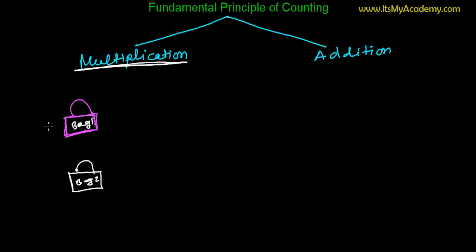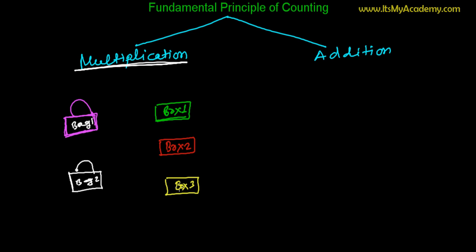I have two bags — one is pink and another is white — and I get very hungry at school. So my mom bought me three tiffin boxes: tiffin box one is red, tiffin box two is yellow, and tiffin box three is green. So here I have two bags and three tiffin boxes. I'm curious to know how many total ways I can follow while going to school, taking one bag and one tiffin box.